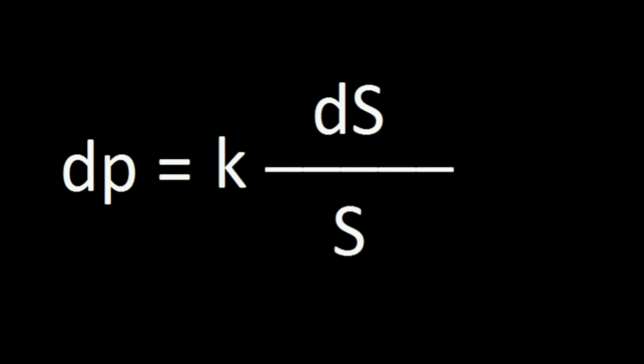Since Weber's Law fails at low intensity, so does Fechner's Law. Deriving Fechner's Law. Fechner's Law is a mathematical derivation of Weber contrast.